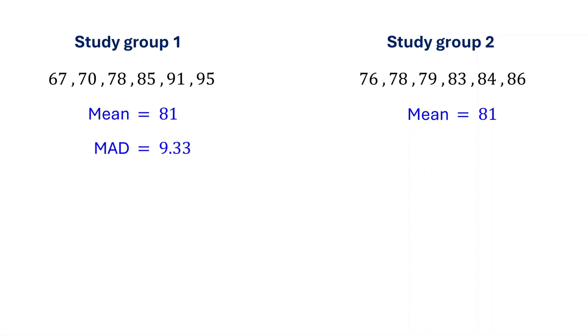But their mean absolute deviations are different. The first group has a mean absolute deviation of 9.33, while the second group has 3.33. So for which group do you think the mean is a better indicator of the test score?